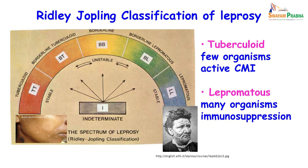How is leprosy classified? The Ridley-Dowjoplin classification has been used for years, with histology as the mainstay of diagnosis. According to this classification, patients can be divided into two large groups: tuberculoid leprosy at one end of the spectrum — where patients have few bacilli and good cell-mediated immunity — and lepromatous leprosy at the other end, where there are many organisms and there is immunosuppression. Between these are borderline tuberculoid, borderline, and borderline lepromatous cases.